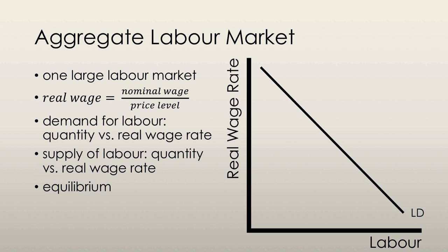The real wage rate is calculated as the money wage rate divided by the price level, and its significance is that it shows us the quantity of goods and services that one hour of labor actually earns. The quantity of labor demanded increases as the real wage rate decreases because of the law of diminishing returns, as shown by the production function. Firms will only hire more labor if the real wage rate falls to match the fall in extra output produced by that labor.